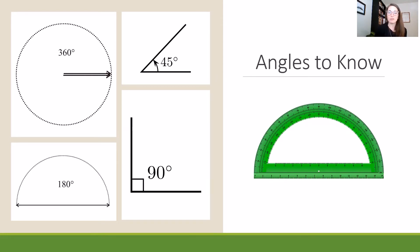On the angles to know, you'll see that we have the 45-degree angle, the 90-degree angle, the 180-degree angle, and the 360-degree angle. The first angle, the 45 degrees, is a common one because it's half of the 90 degrees. Now, 90 degrees is called a right angle, and anything smaller than 90 degrees is called acute, and anything larger than 90 degrees is called obtuse.